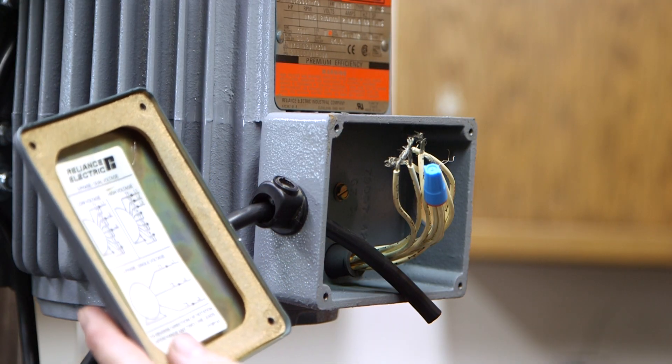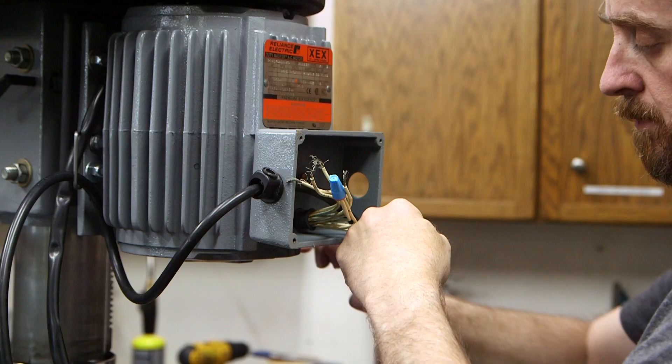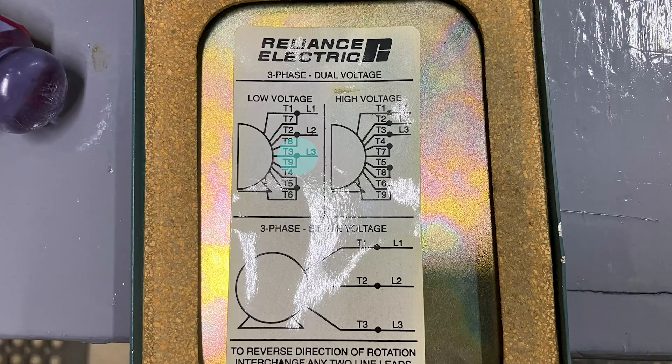So according to the wiring diagram that came with the motor, for 230 I need to wire T1 to T7, T2 to T8, T3 to T9, and then I need to wire T4, T5, and T6 together.